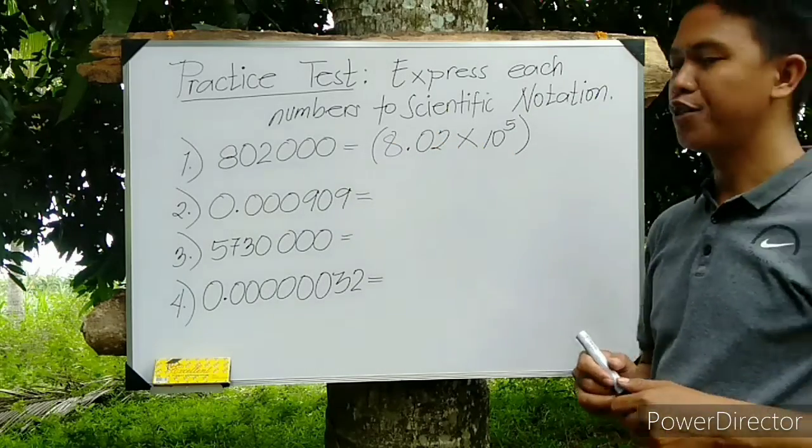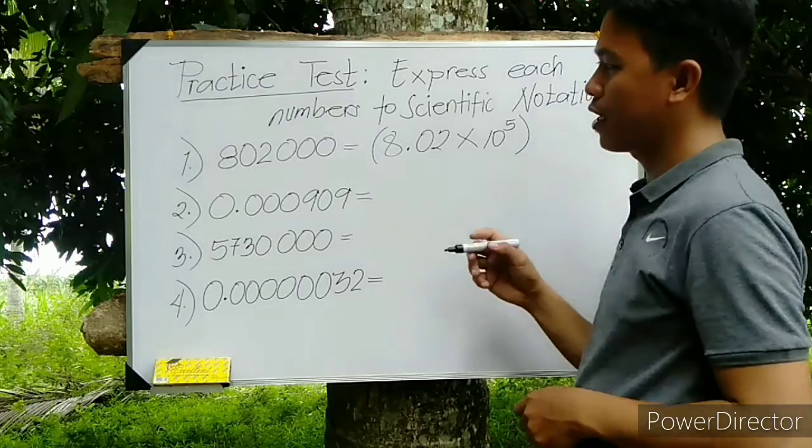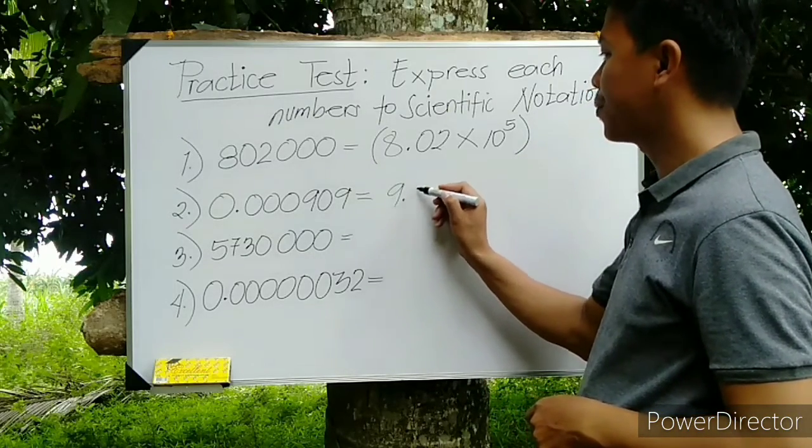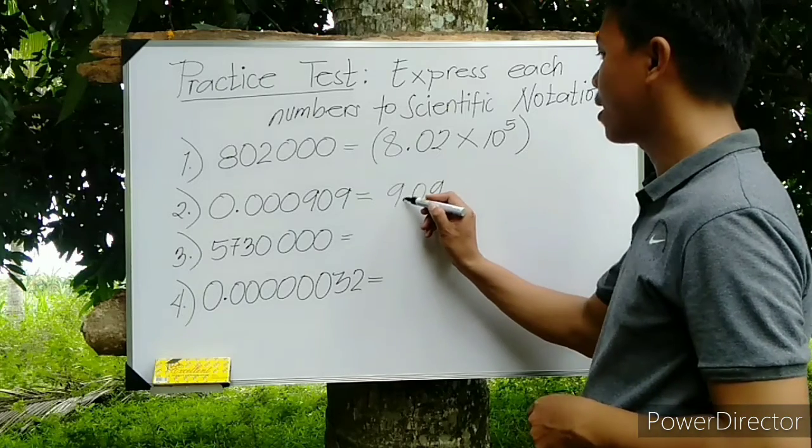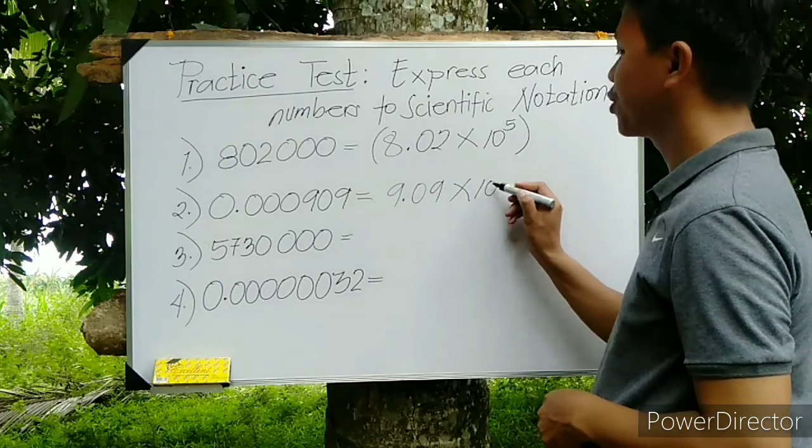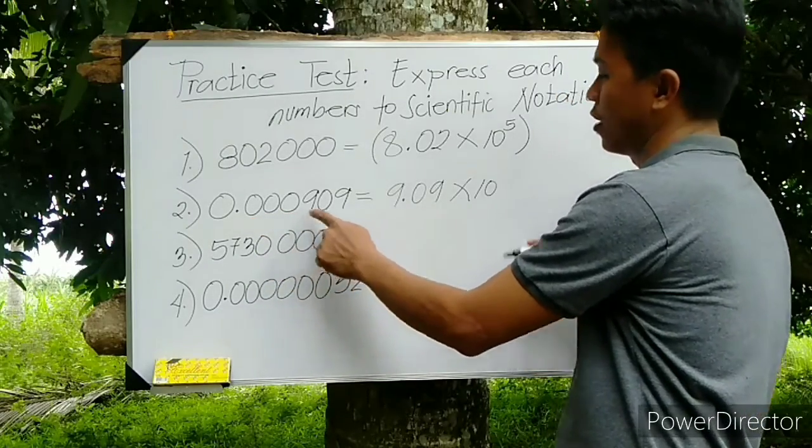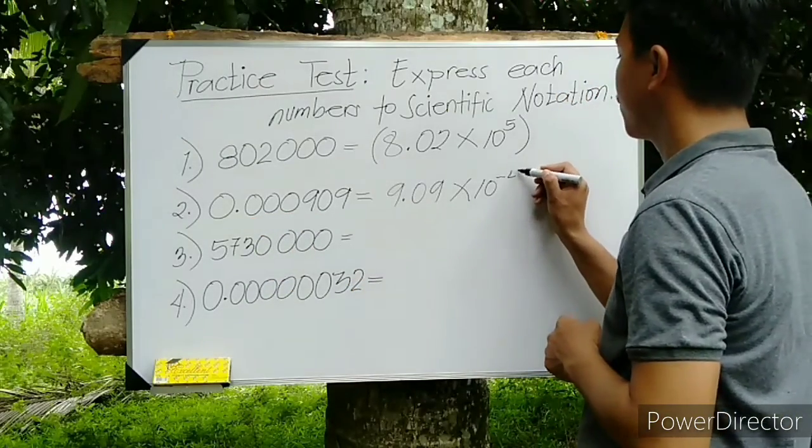For number 2, the answer is 9.09 times 10 to the power of 1, 2, 3, 4—negative 4.